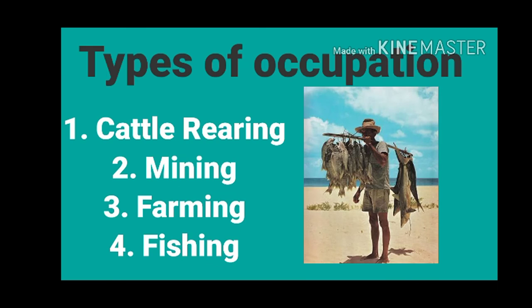Types of occupation. We have: one, cattle rearing; two, mining; three, farming; four, fishing. We also have hunting, lumbering, and other different types of occupation. We are going to focus on cattle rearing, mining, farming, and fishing.